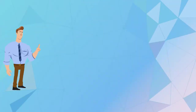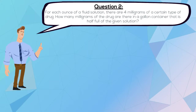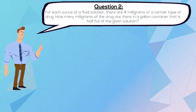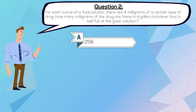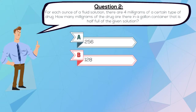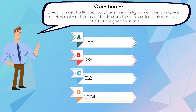Question 2. For each ounce of a fluid solution, there are 4 mg of a certain type of drug. How many mg of the drug are there in a gallon container that is half full of the given solution? A. 256, B. 128, C. 512, or D. 1024.